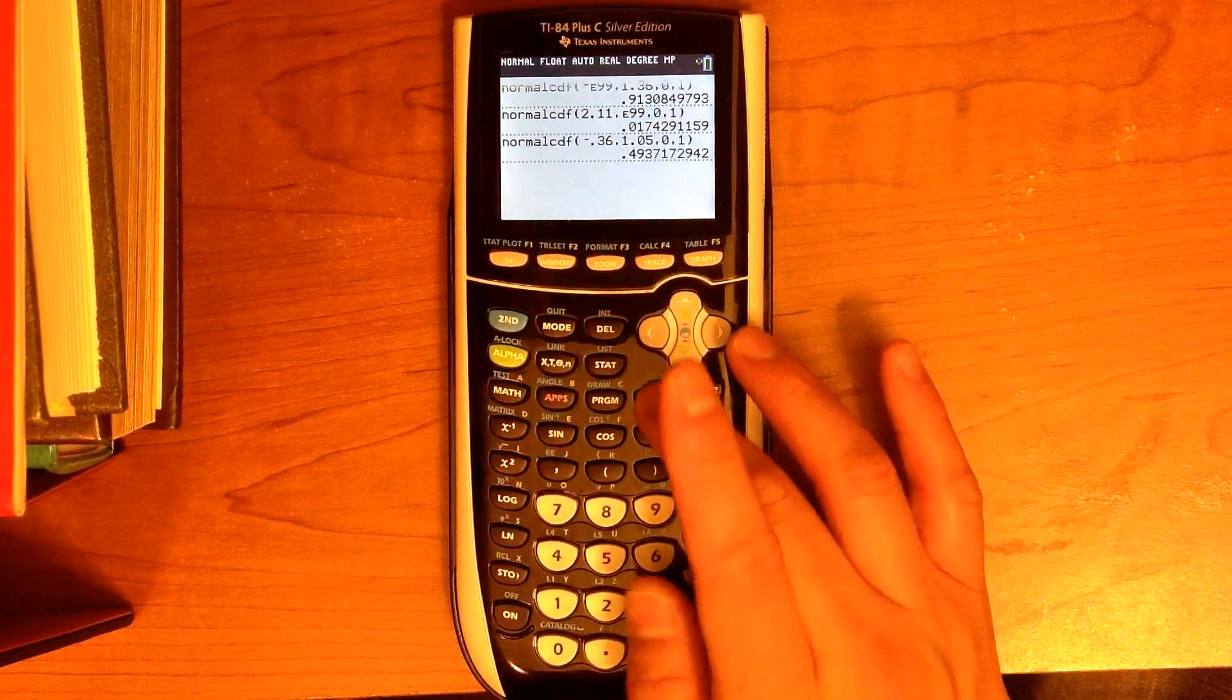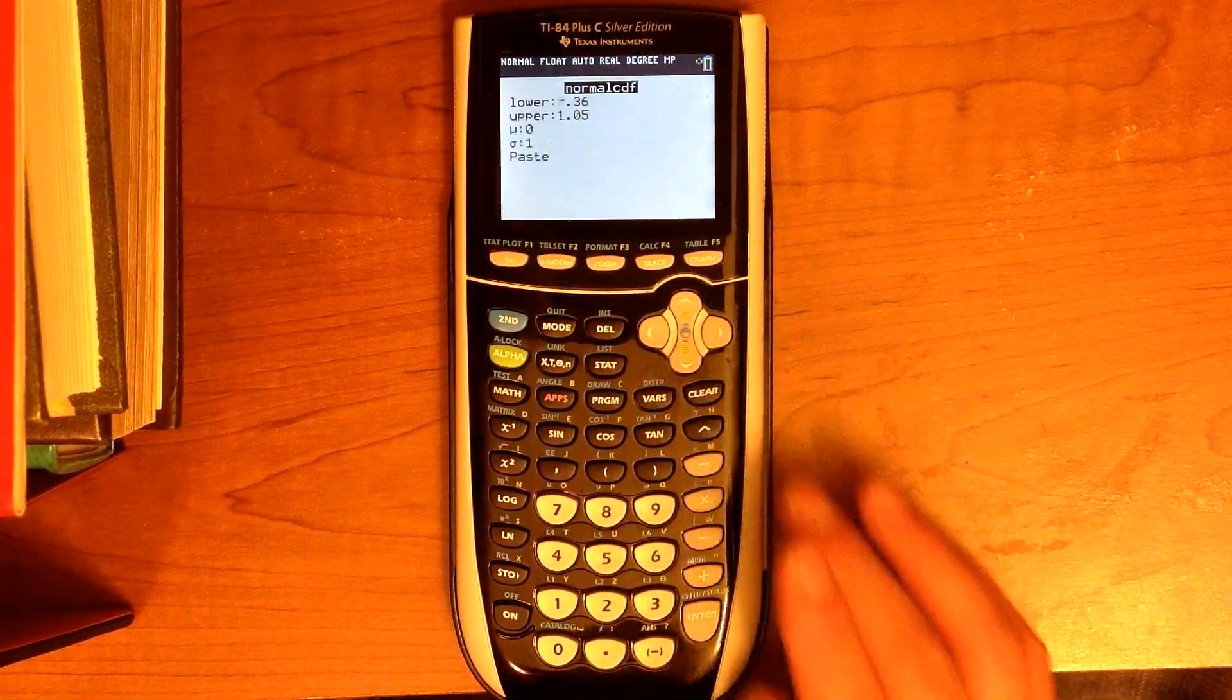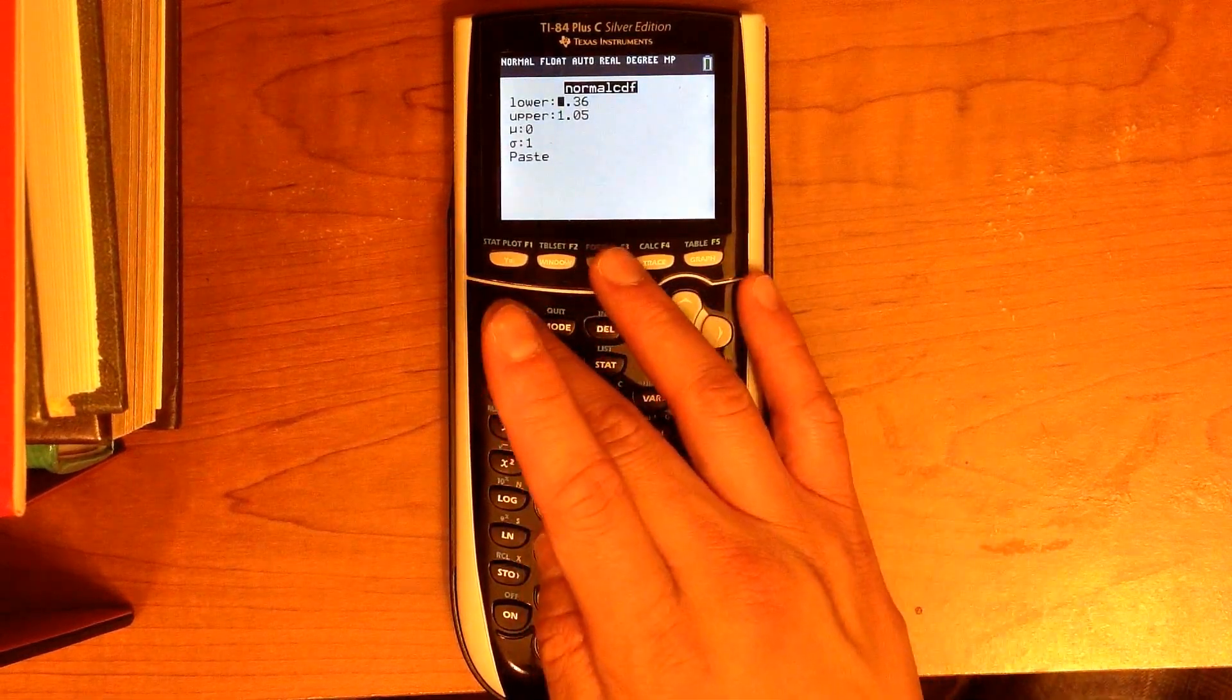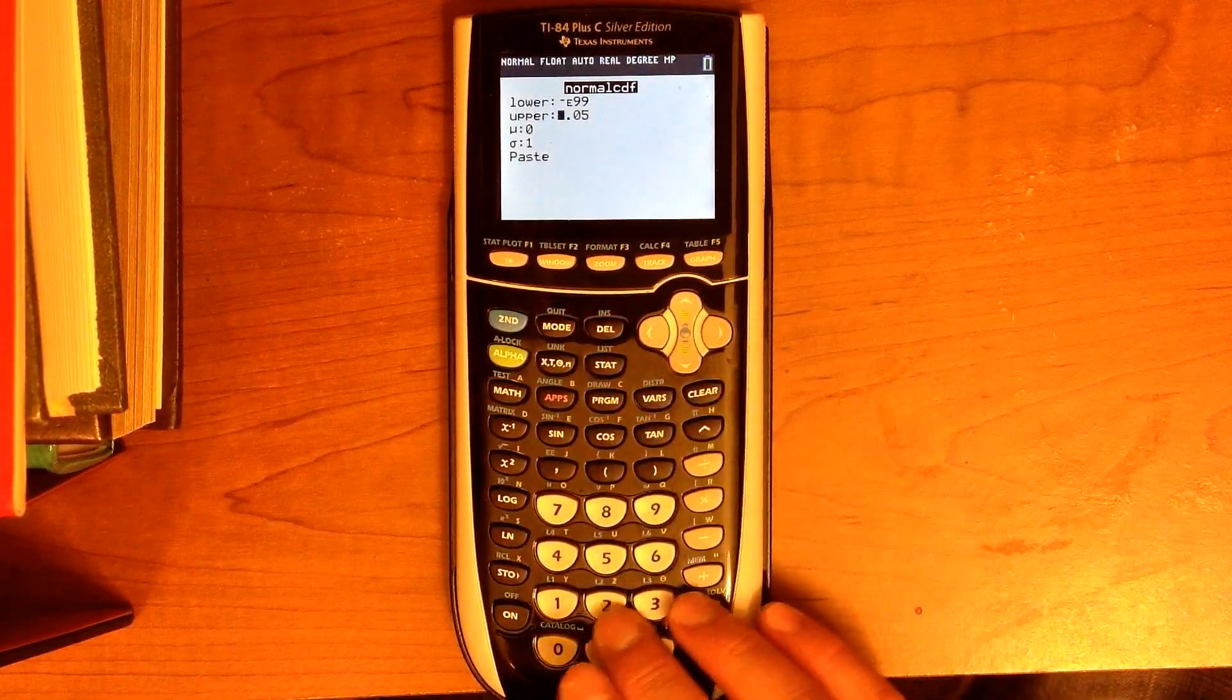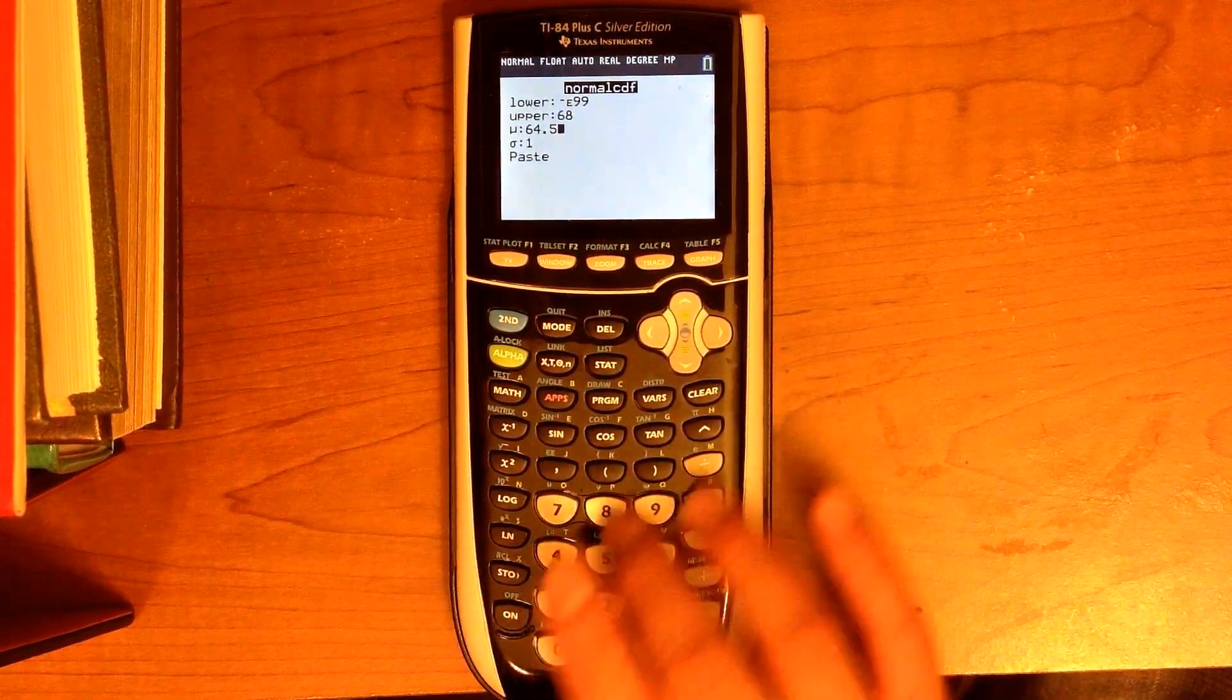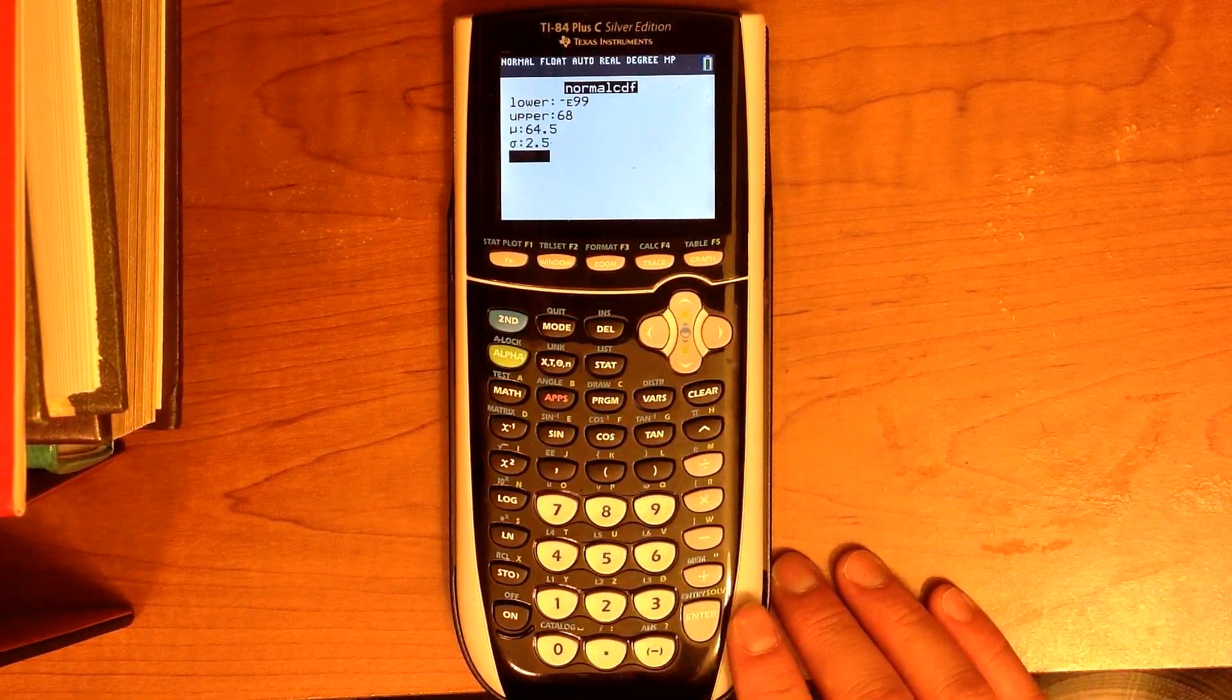So let's do number 16. Find the proportion of women that are shorter than 68 inches. That means we're going to go to the left of 68 inches. So we're going to keep the lower limit as negative E99, upper limit of 68. Now for the mean, we're going to put in 64.5 and the standard deviation of 2.5. So you're basically going to shortcut doing the Z-score.